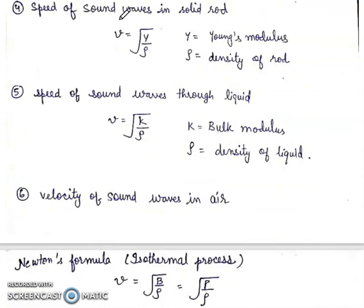Speed of sound waves in a solid rod: V = √(Y/ρ), where Y is Young's modulus and ρ is density. Speed of sound waves through liquid: V = √(K/ρ), where K is the bulk modulus and ρ is the density of the liquid.